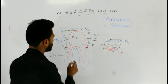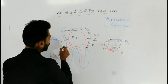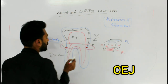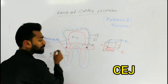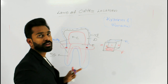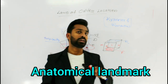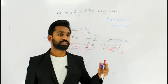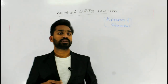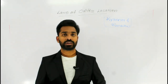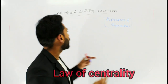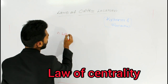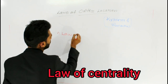Krasner and Rankov considered the cemento-enamel junction (CEJ) as the most important anatomical landmark in defining all nine of their laws. Let's see the first law of Krasner and Rankov: the law of centrality.